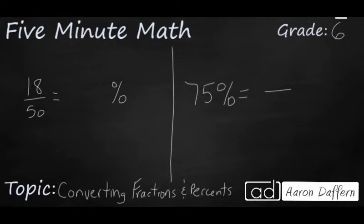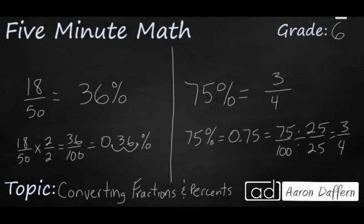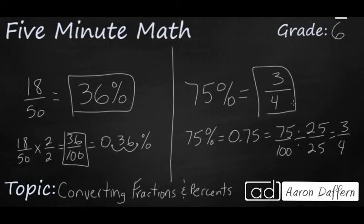Now it's time for you to try. Take 18 fiftieths and change it into a percent. Take 75% and change it into a fraction. When you have your answers, unpause the video and check your work. 18 fiftieths can be changed into the equivalent fraction of 36 hundredths, which makes 36%. 75% is the same as 75 over 100, which reduces to 3 fourths or 3 quarters.